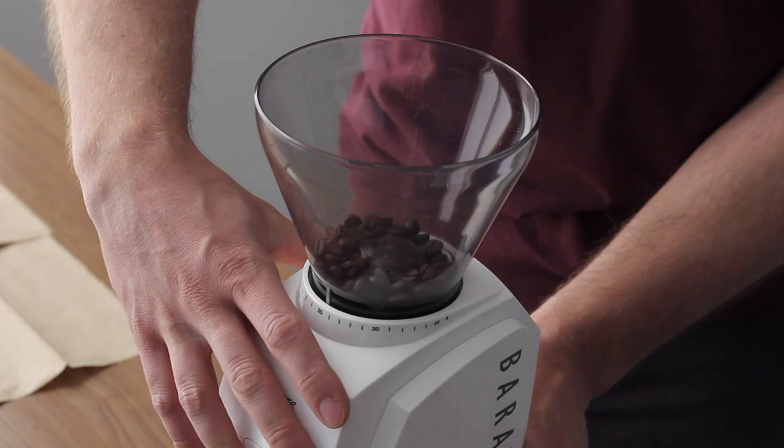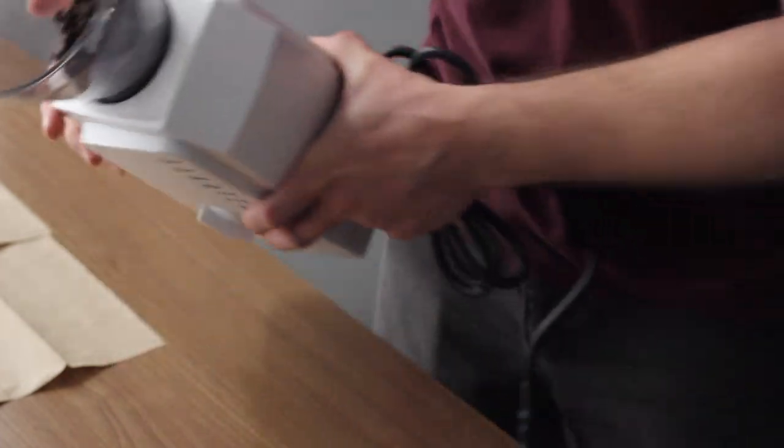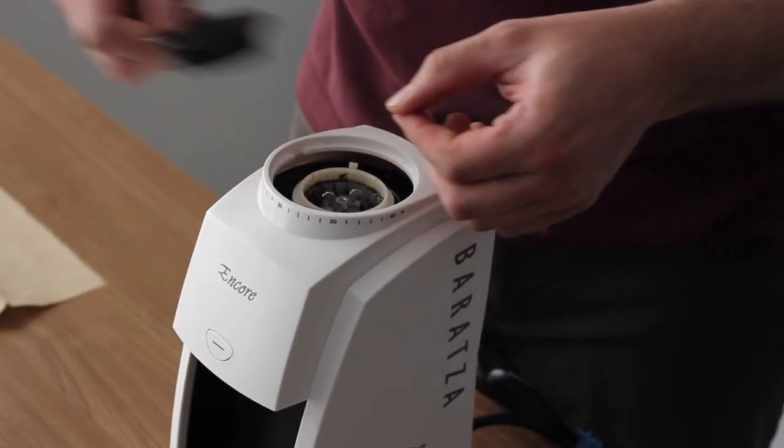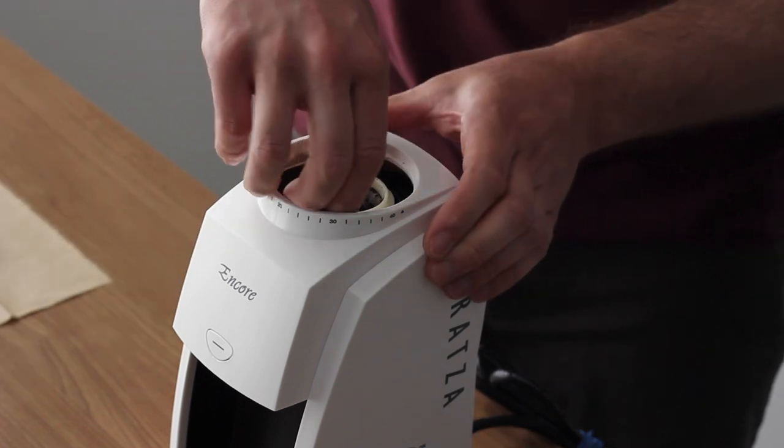So first we're going to want to empty the hopper of any beans that might still be in there. Also make sure your grinder is unplugged. Then we're going to want to remove the hopper, the silicone gasket and the removable ring burr.